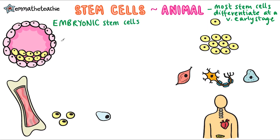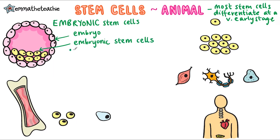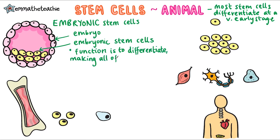An embryo forms when a fertilized egg cell divides, forming a hollow ball of cells. On the inside of this we find the embryonic stem cells, whose function is to differentiate to make all of the specialized cells in the body.